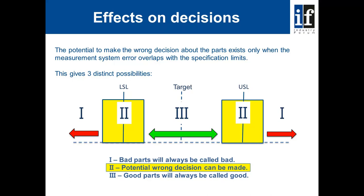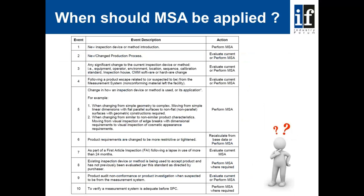By understanding where the zone of uncertainty exists, we are better able to make decisions regarding the results of the measurements we make. MSA helps us to better understand the size and the location of the zone of uncertainty. Within AS13003, there is guidance on when MSA is required.